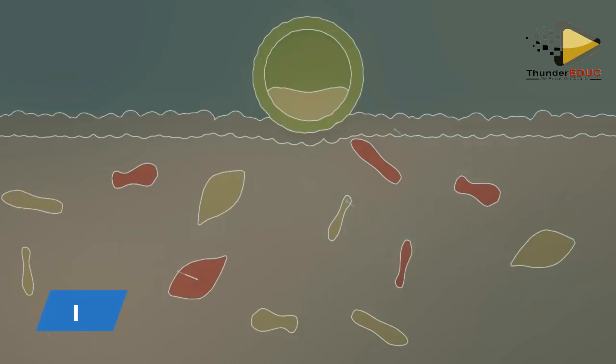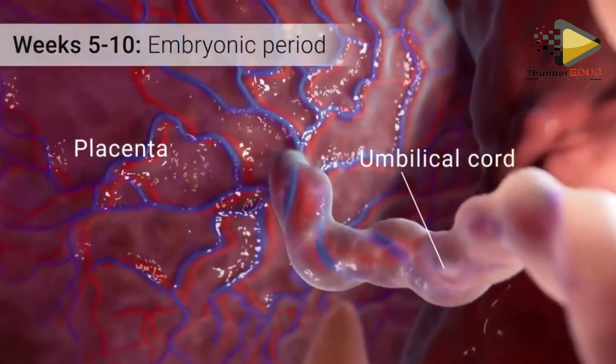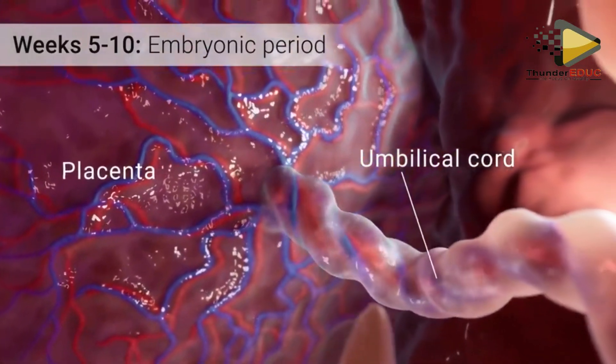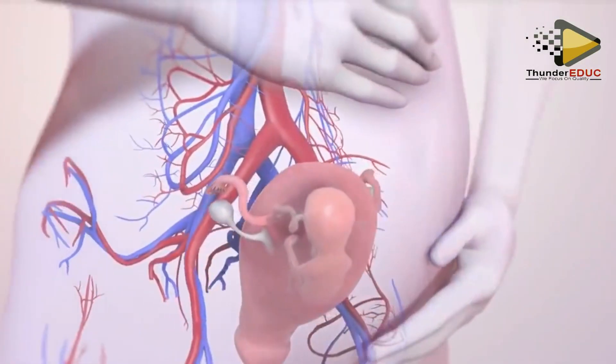Implantation occurs using the outer membrane called chorion, forming finger-like projections called chorionic villi, forming the placenta afterwards.